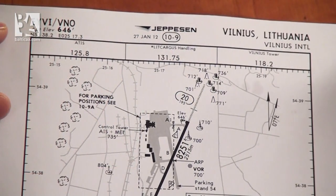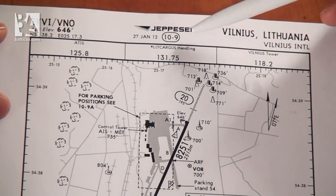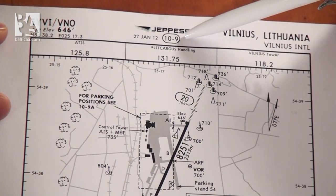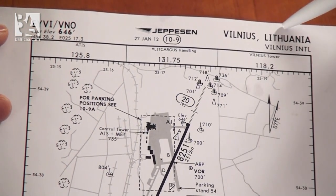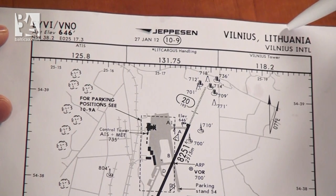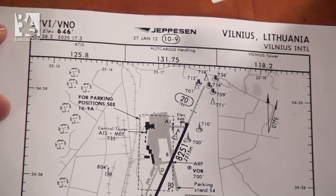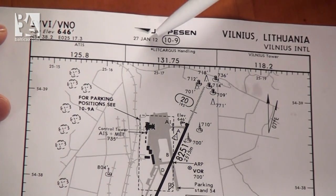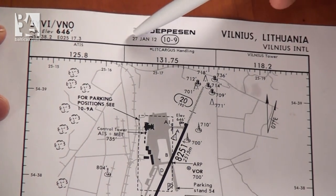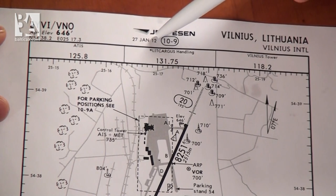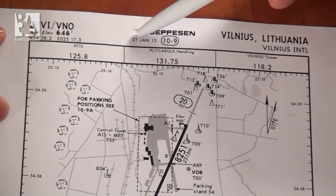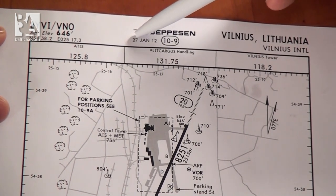Here we have chart 10-9 for Vilnius International Airport in Lithuania, published on 2012 January 27th.